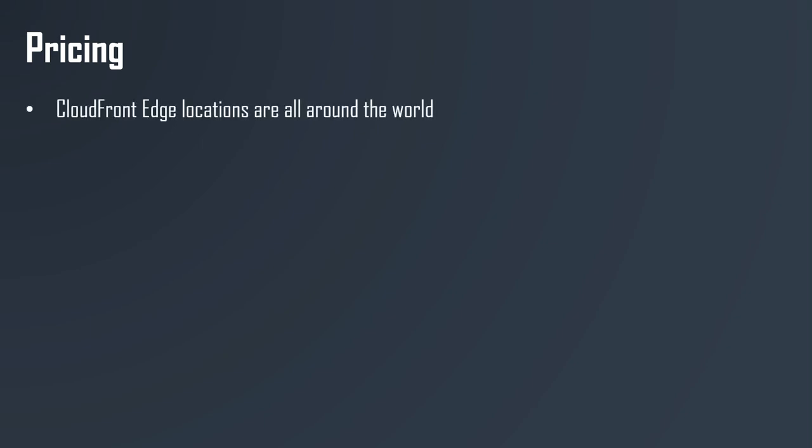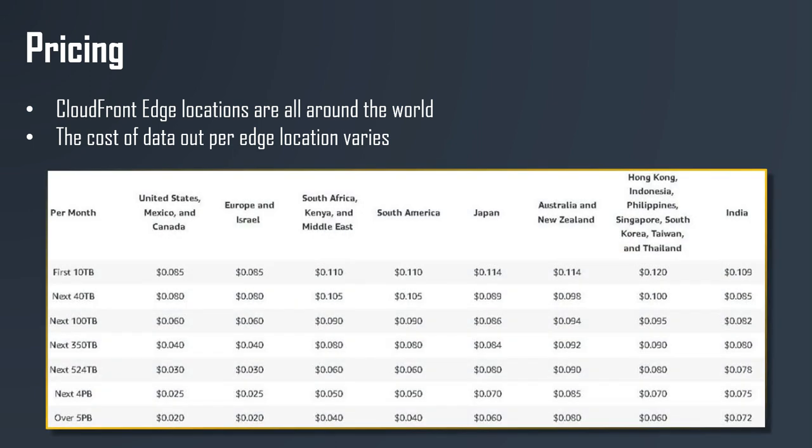Now let's talk about pricing and price classes. CloudFront edge locations are all around the world, and the cost of data out per edge location will vary. Based on the geographic region the edge location is in, you will have different pricing. For example, in Mexico, the United States, and Canada, the first 10 terabytes costs $0.085 per gigabyte. But in India, it is about twice the cost at $0.170 per gigabyte. The more data transferred out of CloudFront, the lower the cost.